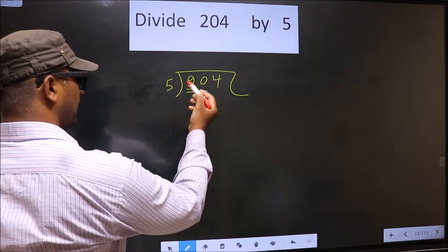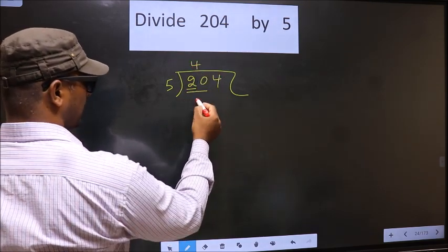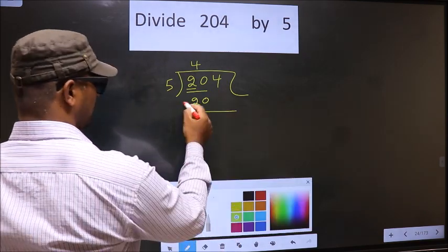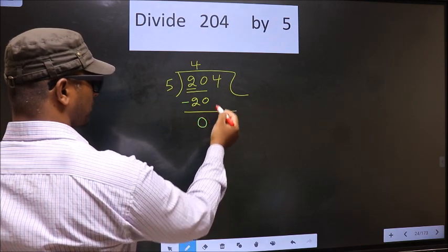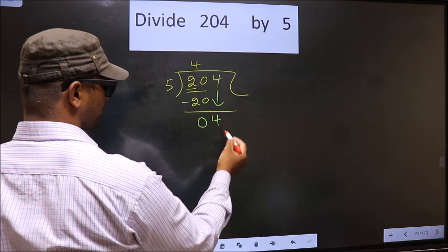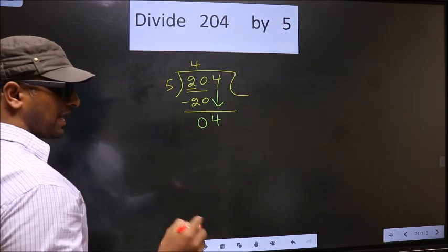When do we get 20 in 5 table? 5, 4 is 20. Now, you subtract. 20 minus 20 is 0. Now, you bring down the beside number that is 4. This is where the mistake happens.